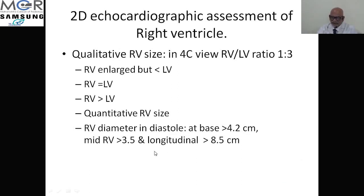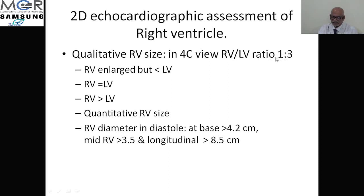This concludes systolic and diastolic function of the left ventricle. Now let us move to the right ventricle. To quantify RV size, the ratio of RV to LV is 1:3 in normal conditions. This ratio may be altered — the RV may be at par with the LV or even larger than the LV. If that is occurring, this is a point favoring right ventricular overload and RV enlargement.